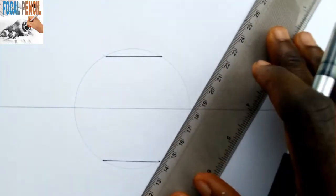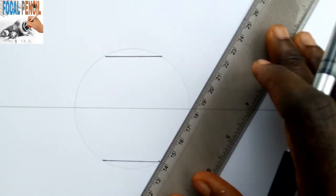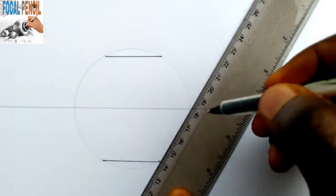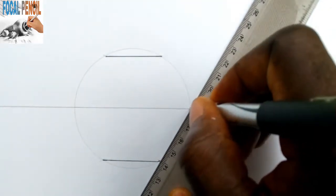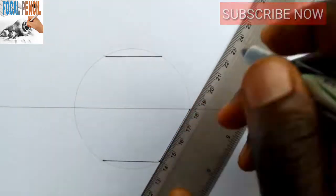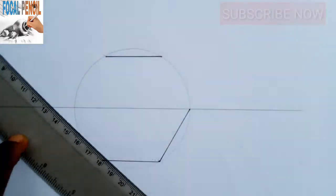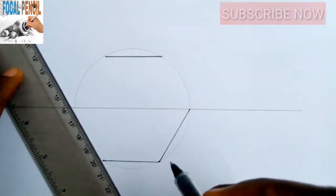Once you are through with that, you join the one from the lower to the construction line, which is the first line. You must do that to the other side.